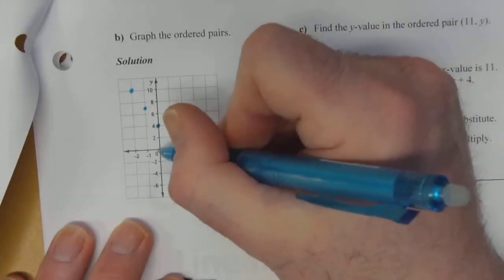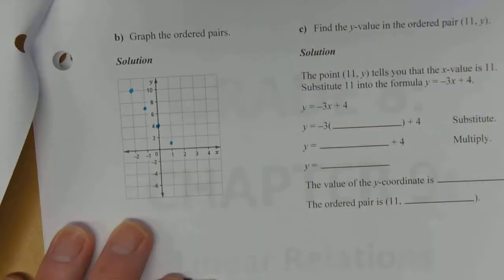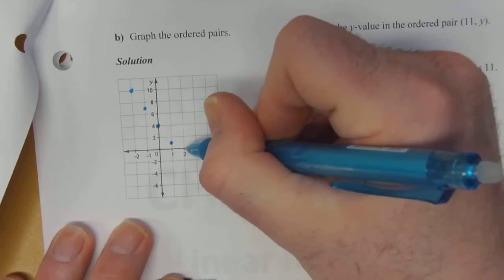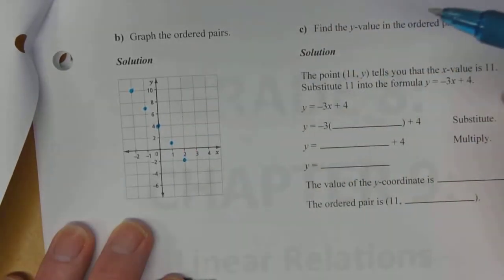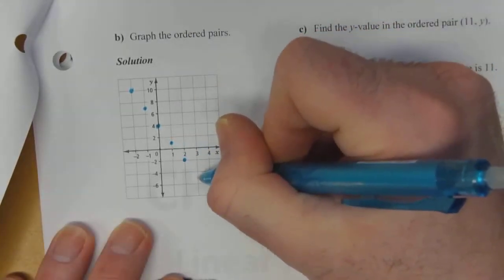Then 1 and 1. 1 and 1 is halfway between 0 and 2. 2, negative 2. 2 and negative 2 goes right there. And then lastly, 3 and negative 5. Which is halfway between negative 4 and negative 6.